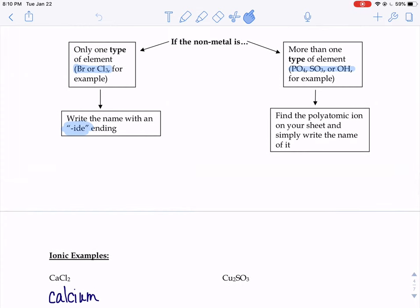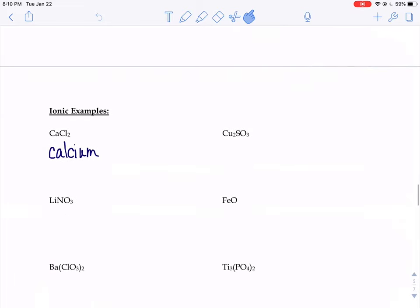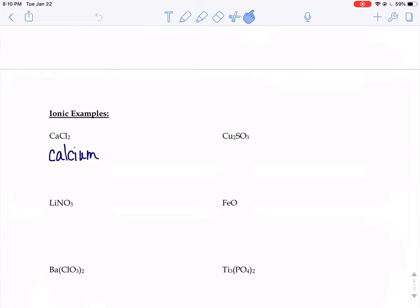This one has two Cls, but it's just Cl. So if it's one type, then we write the name with an -ide ending. So instead of chlorine, we would write chloride.